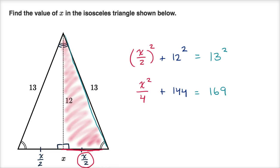Now I can subtract 144 from both sides. I'm going to try to solve for x, that's the whole goal here. So subtracting 144 from both sides, and what do we get? On the left hand side we have x squared over four is equal to 169 minus 144.